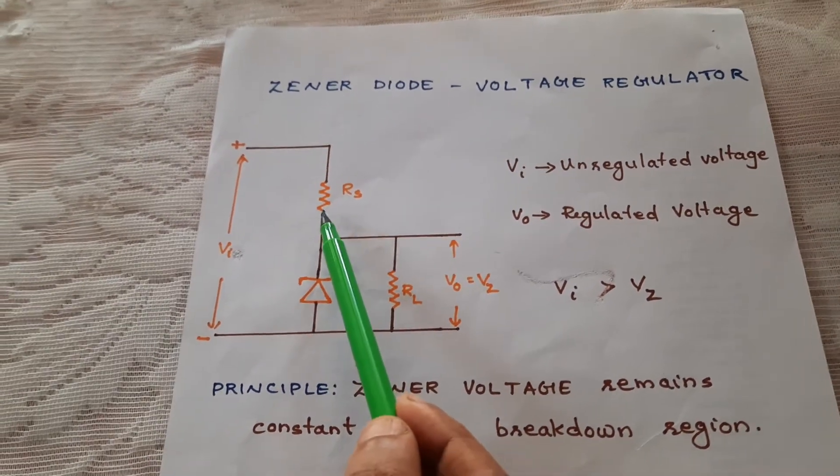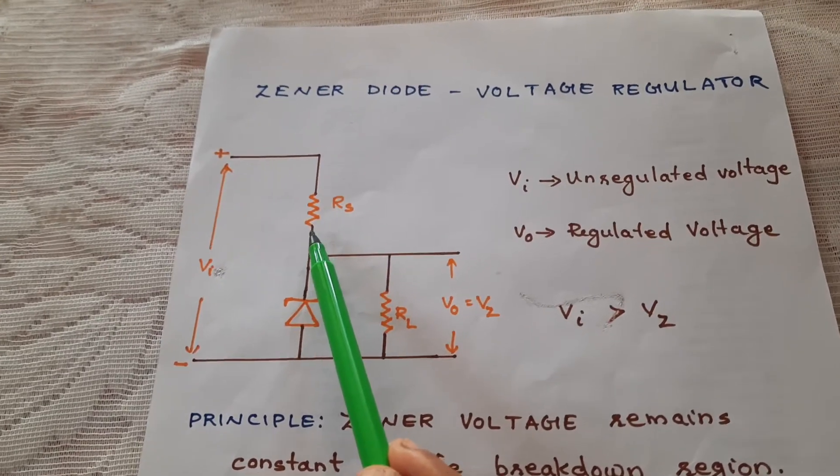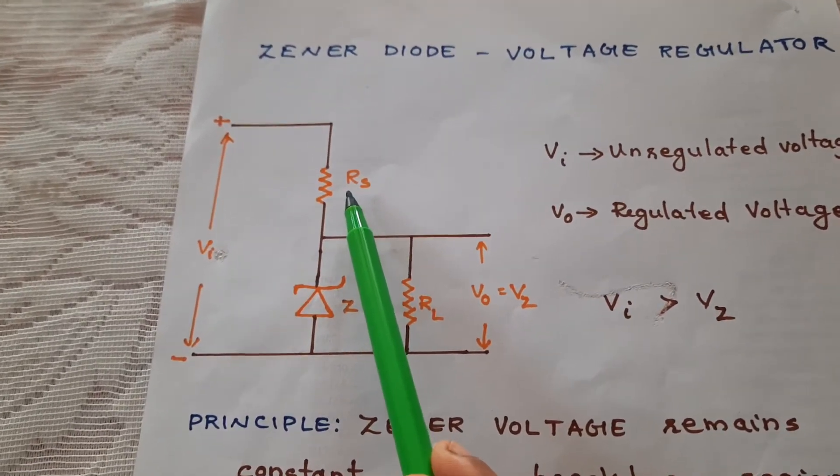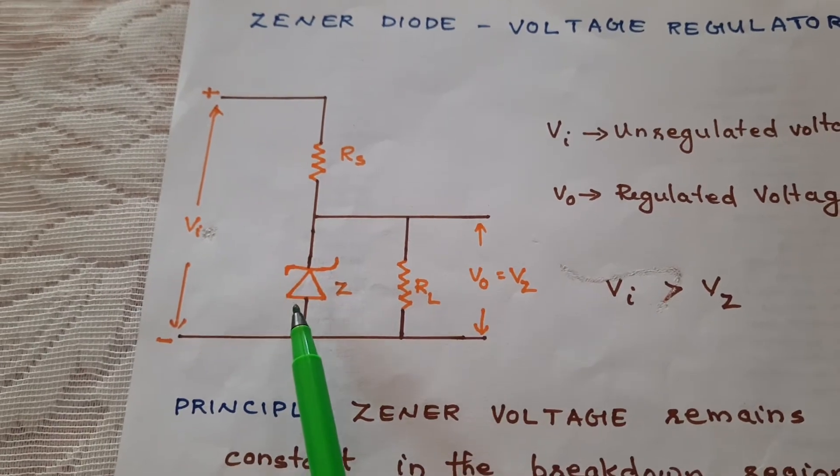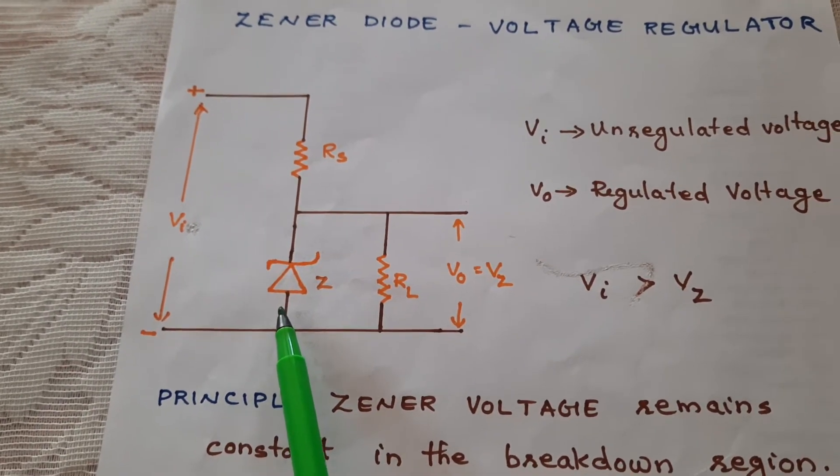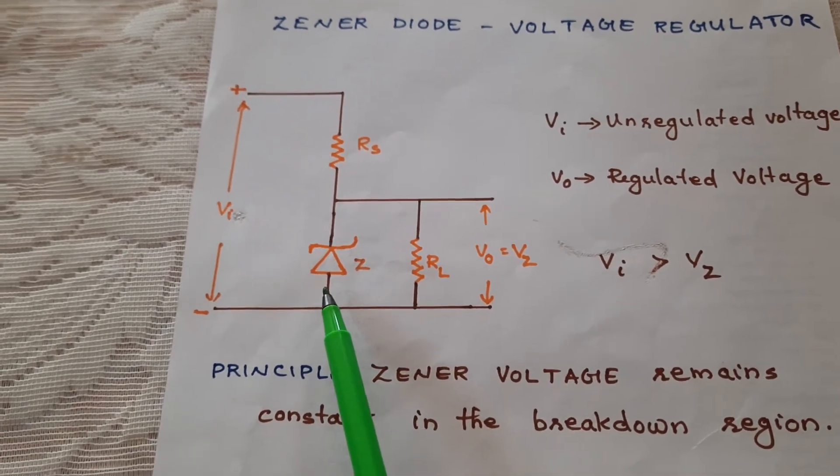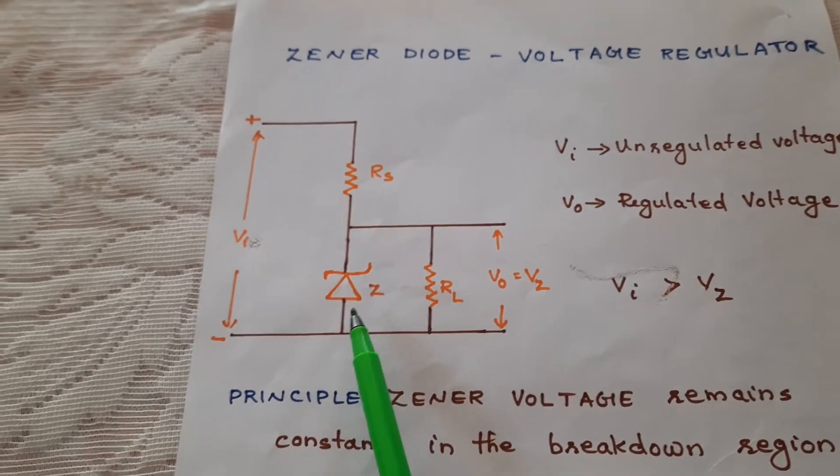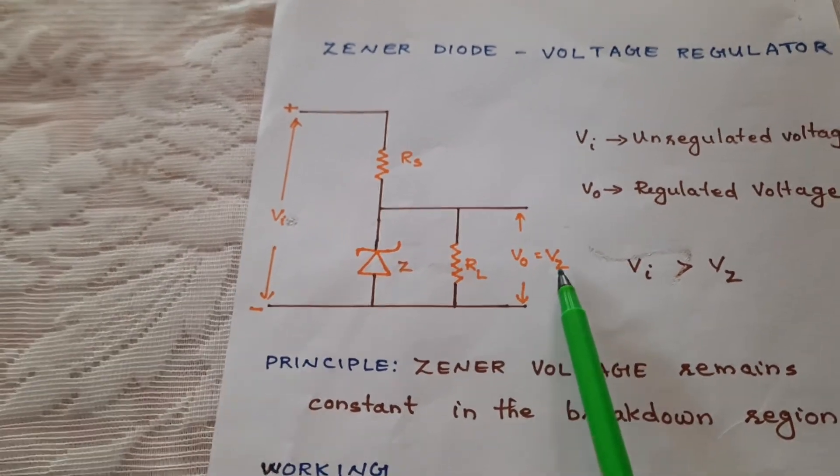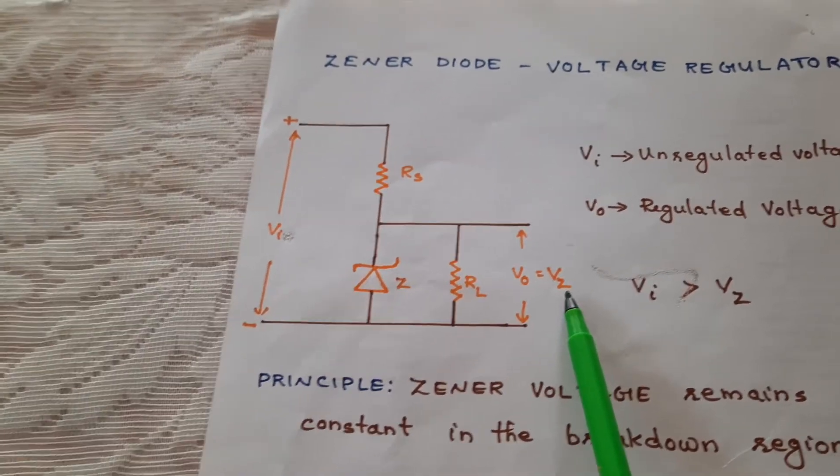As the current through RS increases, voltage across RS increases. But the Zener works in the breakdown region. So, the voltage across the Zener remains constant. The output voltage is equal to VZ, the breakdown voltage.